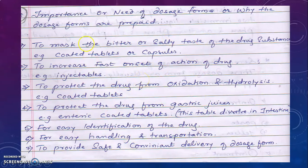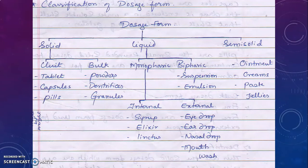These are the reasons why the drug or API is converted into a dosage form. This may be asked in exams: What is the need of dosage forms? These are the seven reasons dosage forms are prepared. Next, we have seen the classification. Dosage forms are classified into three types: solid, liquid, and semi-solid.